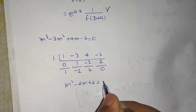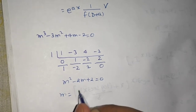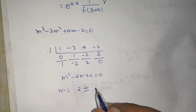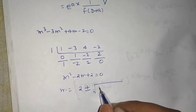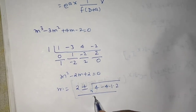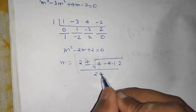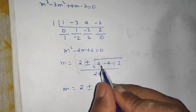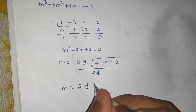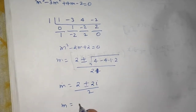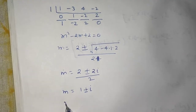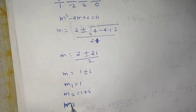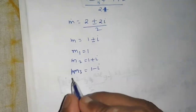Now solve m² - 2m + 2 = 0 using the quadratic formula: m = (2 ± √(4 - 8)) / 2 = (2 ± √(-4)) / 2 = (2 ± 2i) / 2 = 1 ± i. So the three roots are: m₁ = 1 (real), m₂ = 1 + i, and m₃ = 1 - i (a complex conjugate pair).